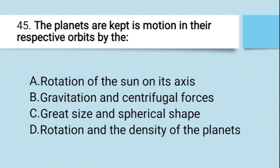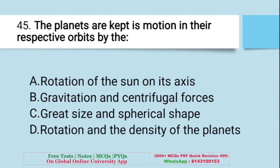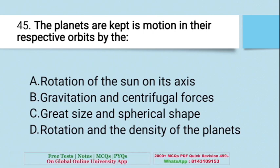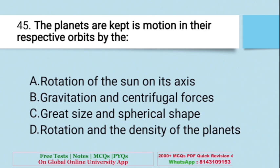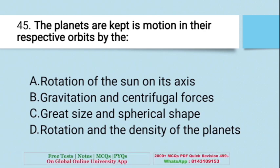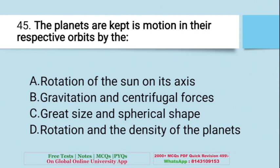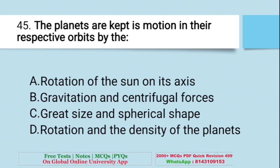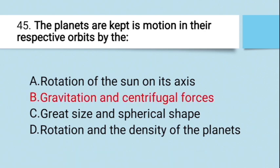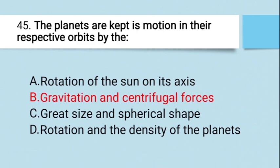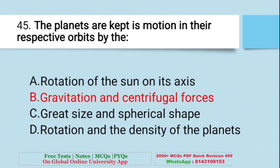Question: The planets are kept in motion in their respective orbits by — A. Rotation of the sun on its axis, B. Gravitation and centrifugal forces, C. Great size and spherical shape, D. Rotation and density of the planets. The right answer is B — gravitational and centrifugal forces. Due to these forces, planets move and remain in orbit.